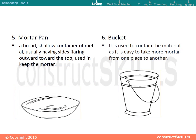Laying tools: mortar pan. A mortar pan is a broad, shallow container of metal, usually having sides flaring outward toward the top, used to keep the mortar. The bucket is used to contain the material, making it easy to take mortar from one place to another.